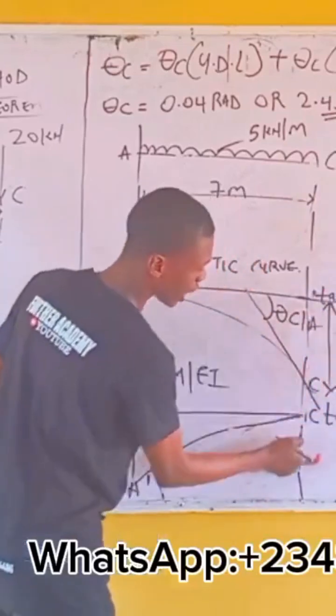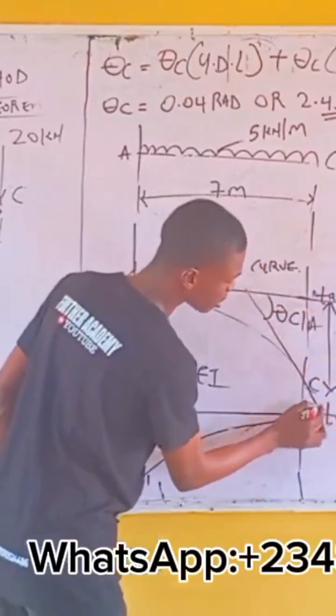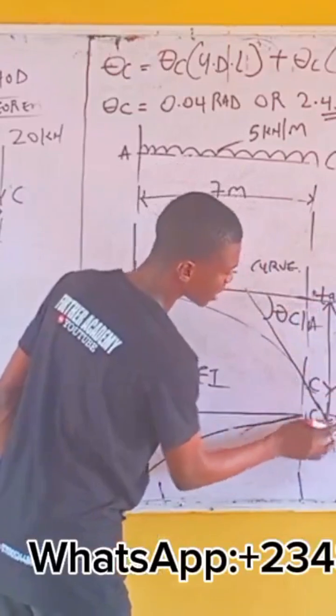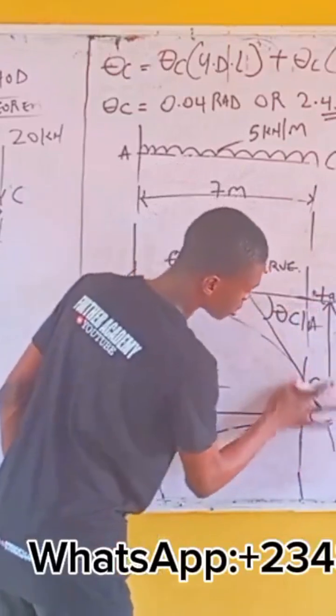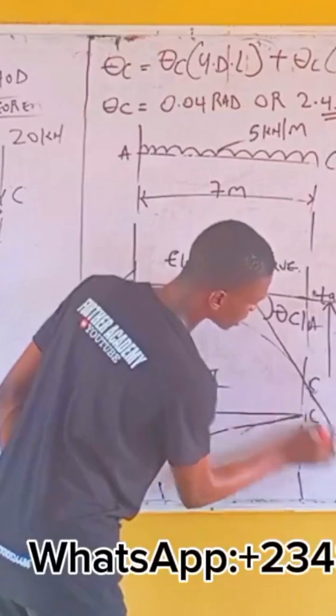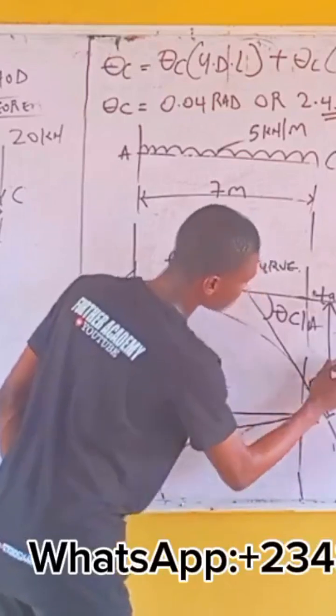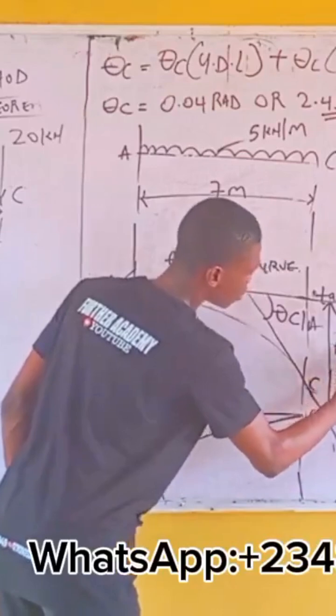This tangent at A and this tangent at C, right? This tangent, this is the vertical deviation. This is tangent at C, so this is the vertical deviation, meaning Tc to A.